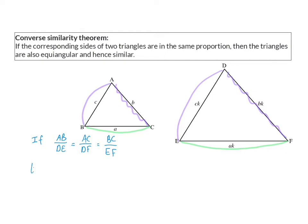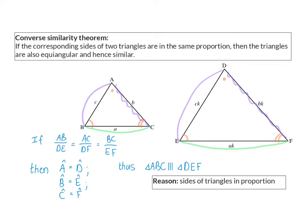If we know this, then we can accept that the angles are the same: angle A equals angle D, angle B equals angle E, and angle C equals angle F. We can then say that these two triangles are similar. The reason for this Converse Similarity Theorem is that the sides of the triangles are in the same proportion.